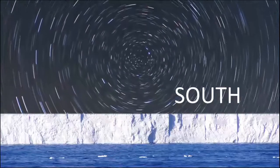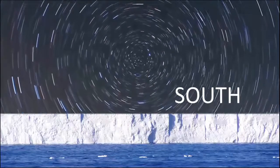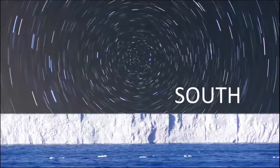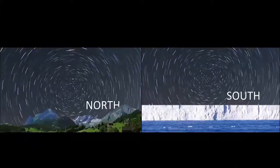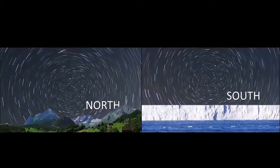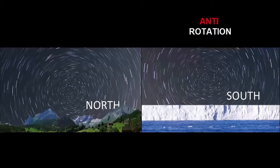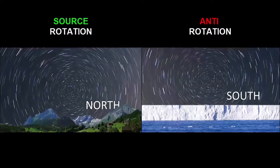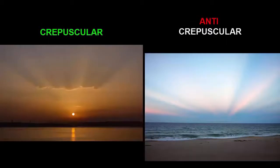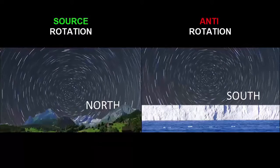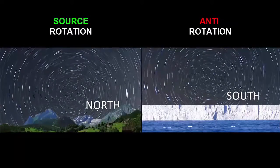Hey everybody, P-Brain here. This video is about the clockwise southern celestial rotation that everybody says they see from south of the equator — rotating opposite of the northern celestial rotation around Polaris. What I want to show is that it's not its own rotation, but is in fact just a perspective illusion. It's an anti-rotation in the same way that anti-crepuscular rays are anti-crepuscular, and the southern celestial rotation is nothing but an anti-rotation of the northern celestial rotation.